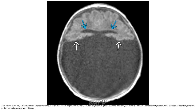So let's see this in this case. This is the axial T1 image of a neonate with alobar holoprosencephaly — showing a monoventricle and a dorsal cyst that displaces the brain anteriorly in a pancake configuration. Note the normal lack of myelination of the cerebral white matter in this neonate.